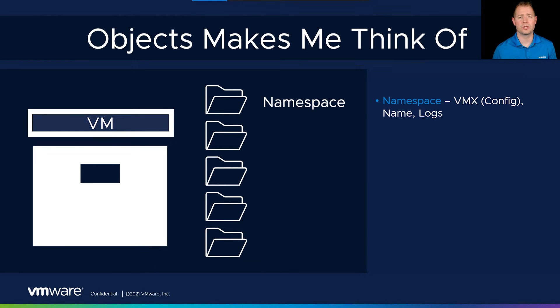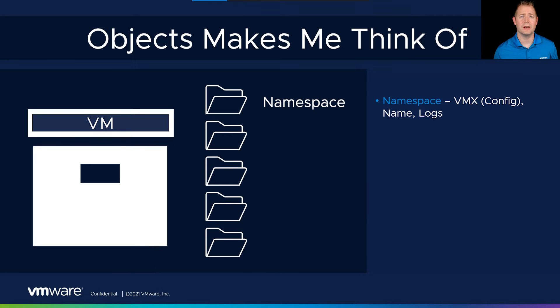Lastly, the namespace stores our vmware.log file. This records when we powered the VM on, when we powered it off, resets, etc. So these are all things stored in our namespace, which is our first type of object for vSAN.